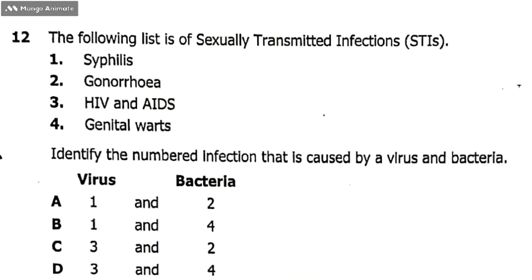The following list is of sexually transmitted infections (STIs): number one syphilis, two gonorrhea, three HIV and AIDS, four genital warts. The question is: identify the numbered infection that is caused by viruses and bacteria.